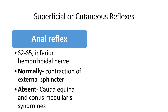To elicit the anal reflex, the root value is S2 to S5, inferior hemorrhoidal nerve. We have to give a slight stroke over the perianal skin, which will lead to contraction of the external anal sphincter. This reflex will be absent whenever the patient is having cauda equina or conus medullaris syndrome.